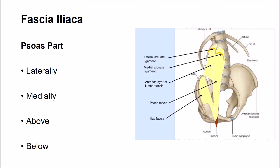The psoas part of the fascia iliaca is attached laterally to the anterior surface of the transverse processes of the lumbar vertebrae, where it blends with the anterior layer of the thoracolumbar fascia. Medially, this fascia is attached to the bodies and intervertebral discs of the lumbar vertebrae, where it forms tendinous arches. Above, the fascia thickens to form the medial arcuate ligament, which gives origin to the fibers of the diaphragm. Below, the fascia continues with the fascia iliaca.